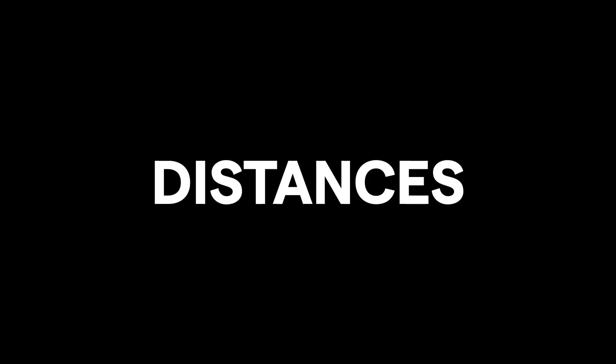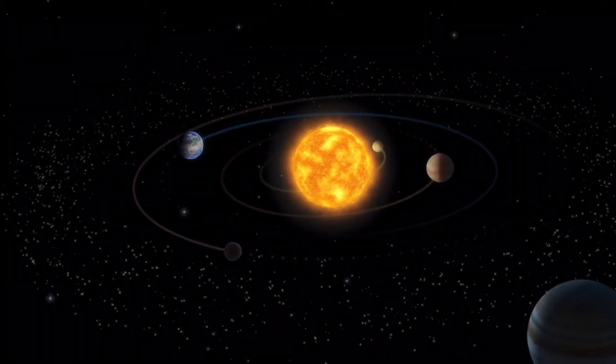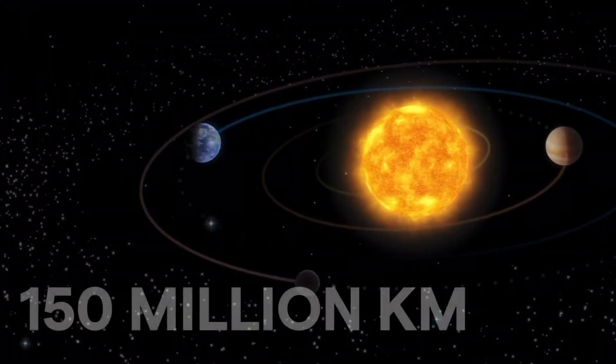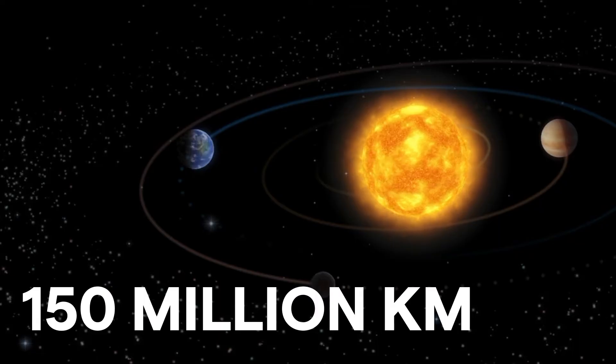We should also consider the distances between them, as that is key in how and why eclipses occur. While it varies throughout the year, the Earth's average distance from the Sun is about 150 million kilometers.